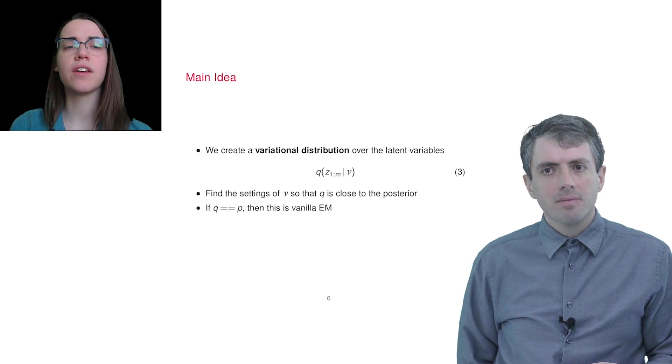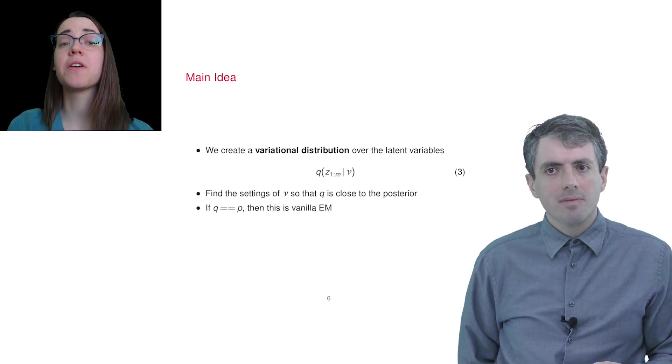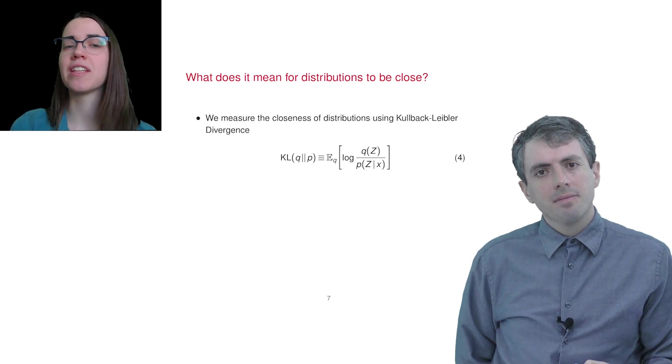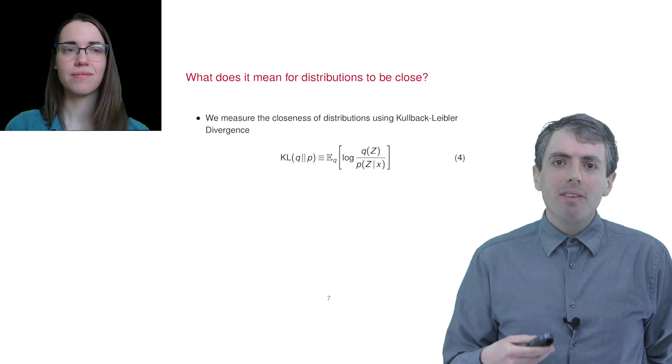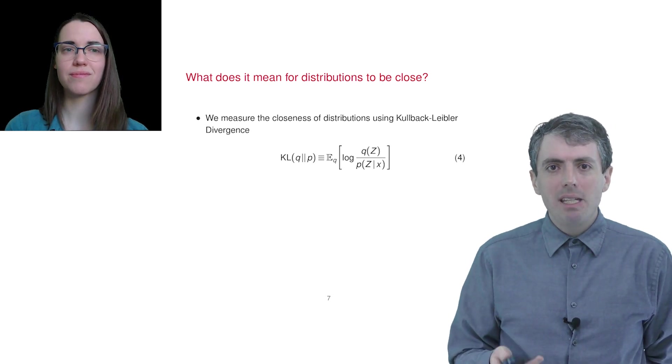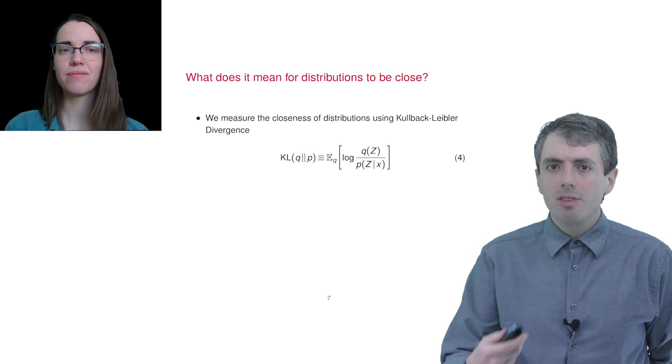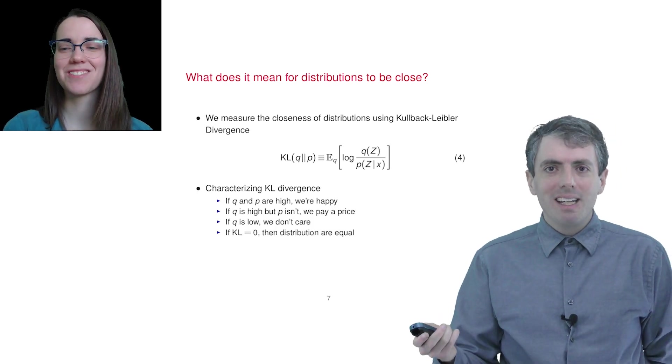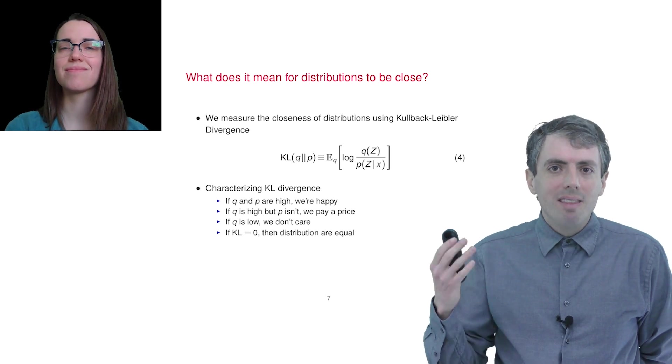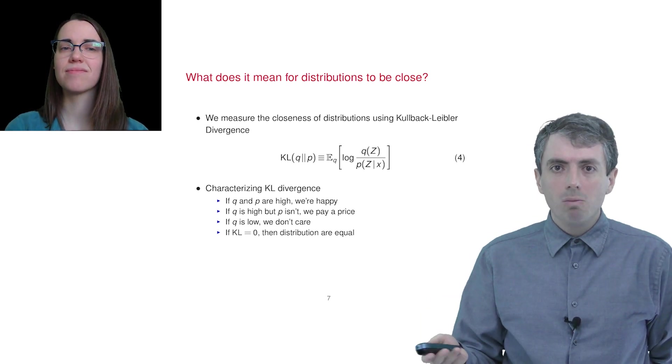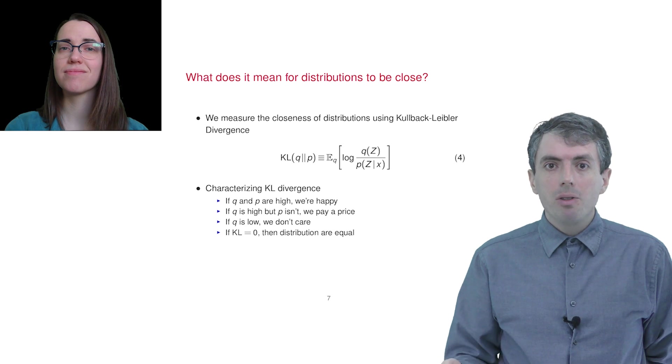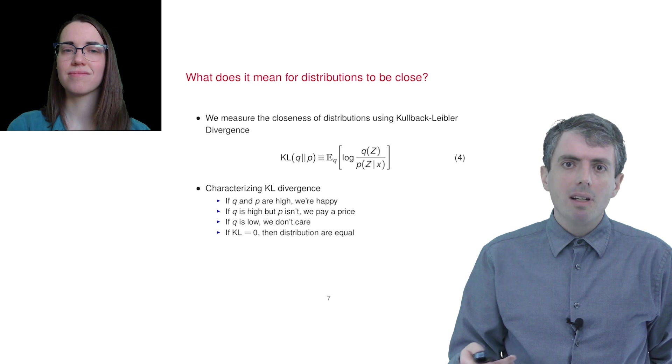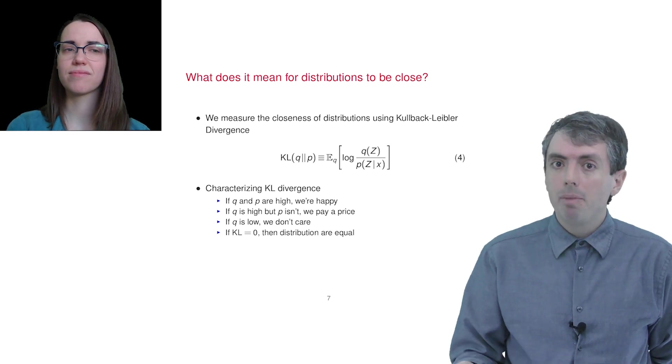What does it mean for two distributions to be close to each other? We'll use something called the Kullback-Leibler divergence to measure the distance between distributions. Here's the definition. It's sometimes called the KL divergence for short. Let's think about the various cases of p being big or small and q being big or small. If both are big, they cancel out, and you have log of 1, which is close to zero, so you don't pay a big price. If q is high, but p isn't, then you have a big number, and the distributions are far apart.